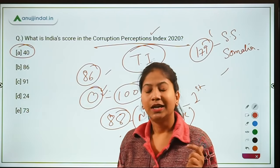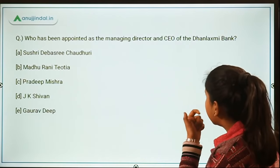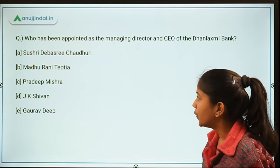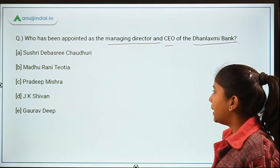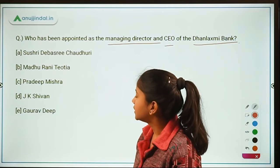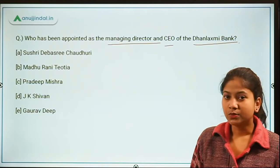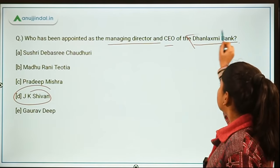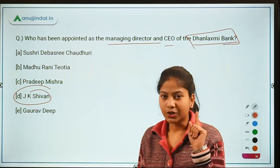My question for you: tell me the headquarters of Transparency International in the comment section below. The next question is another important appointment: who has been appointed as the Managing Director and CEO of Dhanlaxmi Bank? The options are Sushri Devashri Chaudhuri, Madhuri Rani, Pradeep Mishra, JK Shivan, and Gowri Deep. The right answer is option D — JK Shivan. Tell me in the comment section where Dhanlaxmi Bank is headquartered.